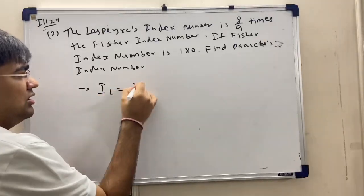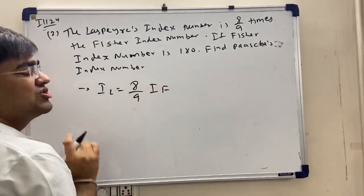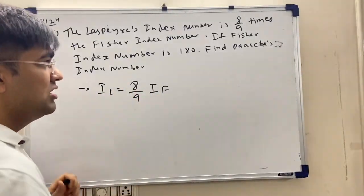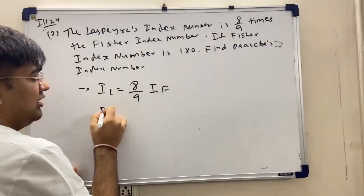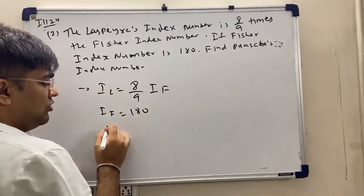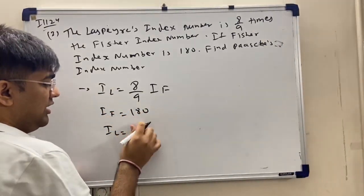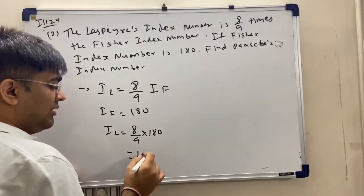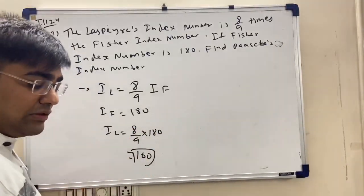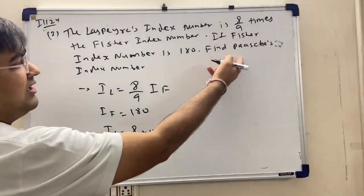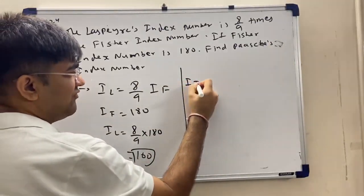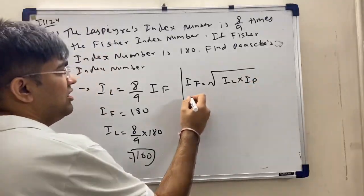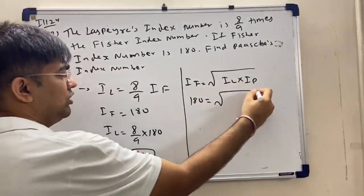The Laspeyre index number is 8 by 9 times the Fisher index number. If the Fisher index number is 180, we can find the Laspeyre: 8 upon 9 into 180, so the Laspeyre index number IL equals 160.